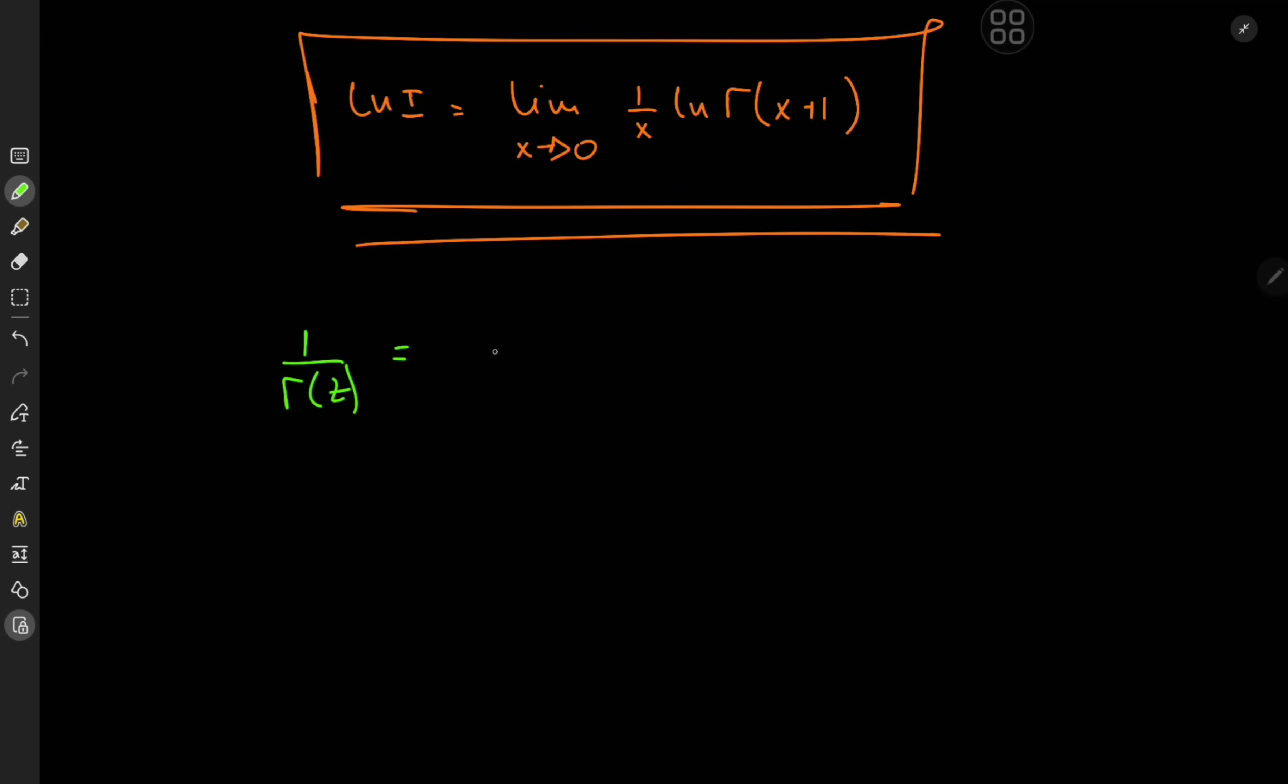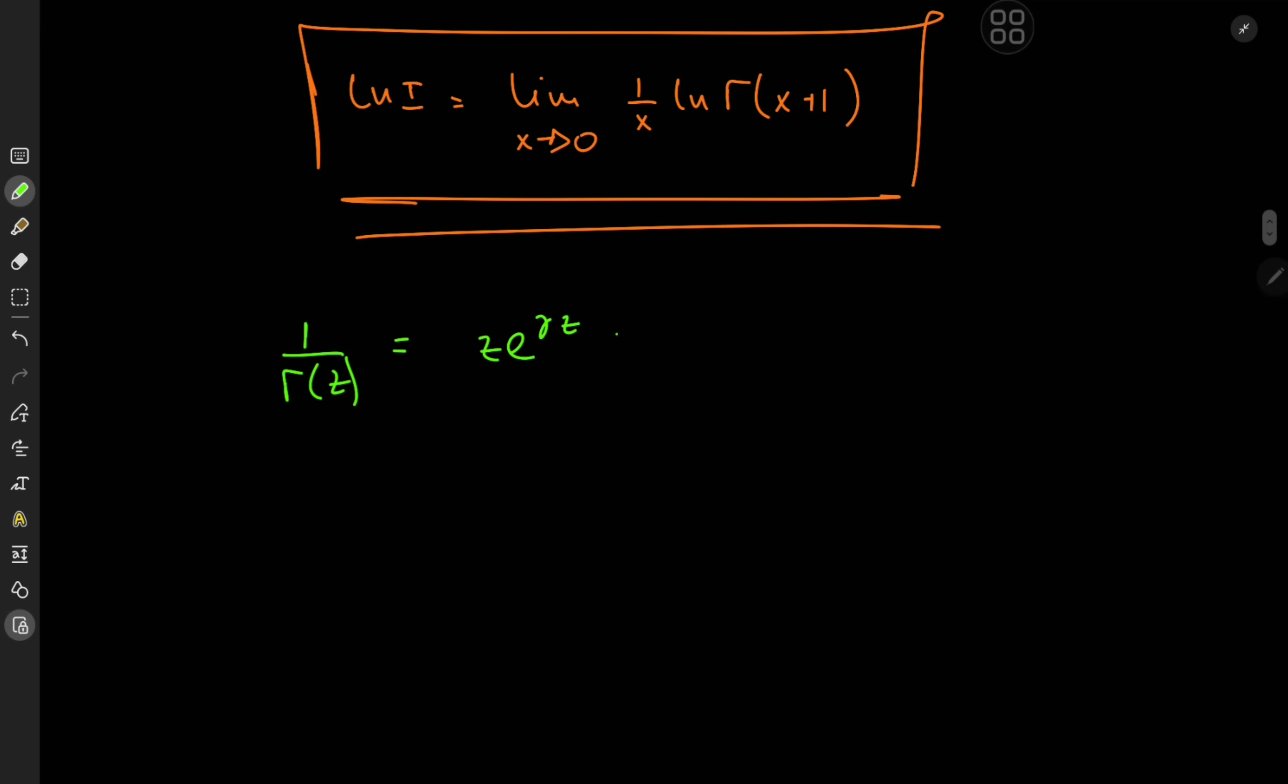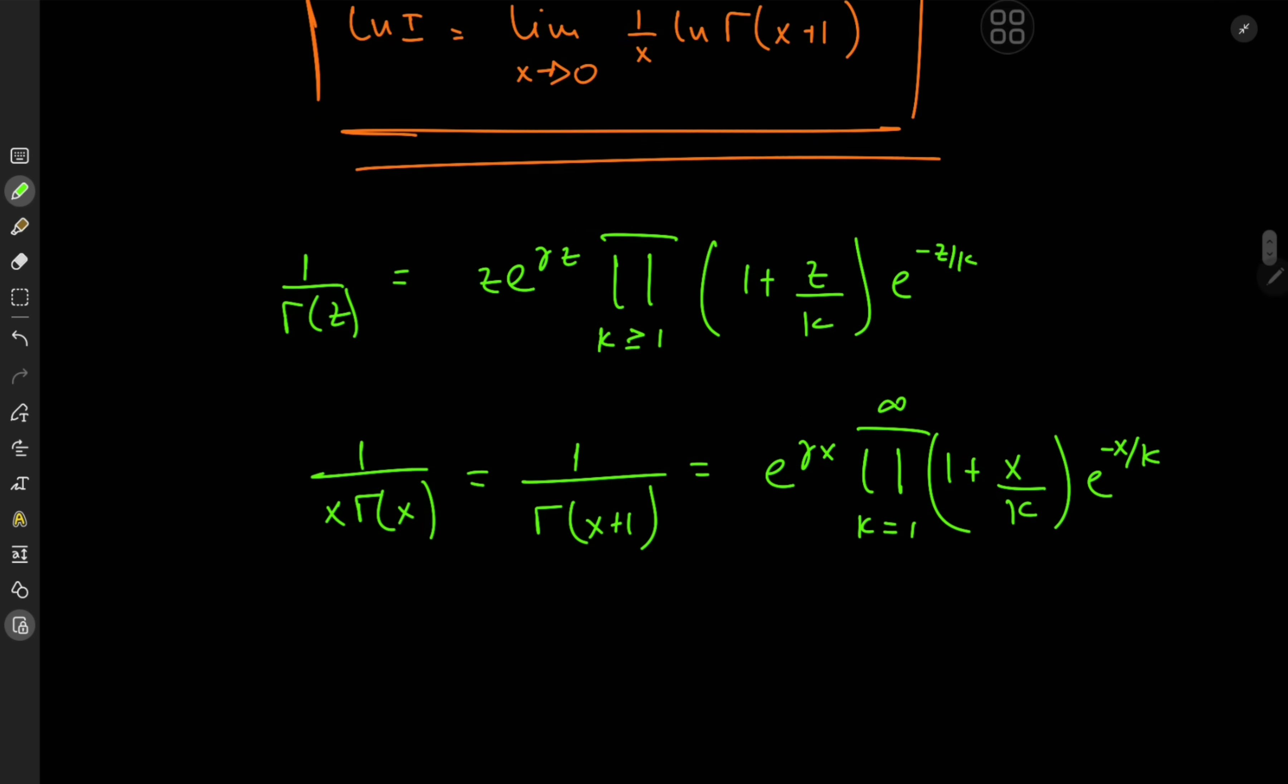So what exactly is the Weierstrass definition of the gamma function? Well we have 1 over gamma z equal to z times e to the gamma z times the infinite product over the positive integers k of 1 plus z over k times e to the negative z over k, and this already looks quite promising. So I'm going to expand by 1 over z or I'll just rename the dummy variable to x. So expanding by 1 over x gives me 1 over x times gamma x and we know from the recursion formula from the gamma function that x times gamma x is just gamma x plus 1. So this thing equals e to the gamma x times the infinite product over k from 1 to infinity of 1 plus x over k times e to the negative x over k and we're interested in the logarithm of this thing.